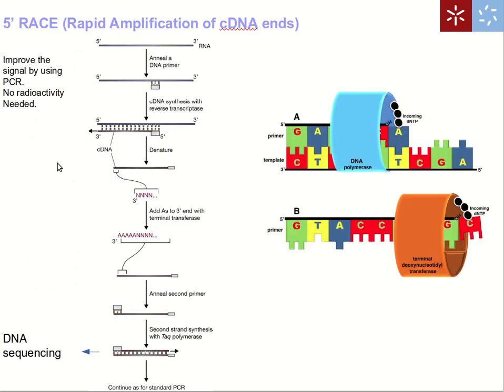One problem with both S1 nuclease mapping and primer extension is that the total amount of DNA analyzed at the end is very small. That is why radioactively labeled DNA is required — otherwise the signal would be too weak to detect on a gel. There is another alternative technique called RACE — rapid amplification of cDNA ends — which uses a similar approach to primer extension but adds a forward primer as well, allowing PCR amplification and producing much more DNA.